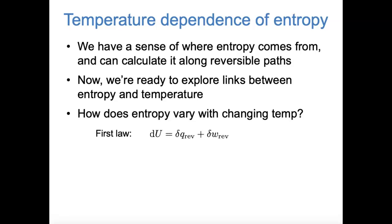As we know from the first law of thermodynamics, a differential change in internal energy is equal to differential amounts of heat transfer plus work. Internal energy is a state function, so this is true no matter what path we're talking about, but we're going to look at a reversible path because it's easier to track changes in energy. We can then use the definitions of entropy and pressure volume work to rewrite these terms. A differential change in entropy is defined as dQ reversible over T, so we can rewrite dQ reversible as T dS, and we can replace dW reversible with minus P dV.